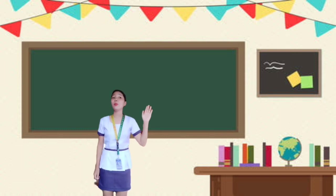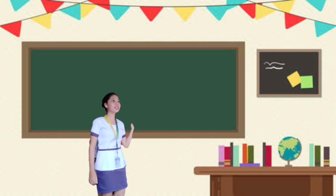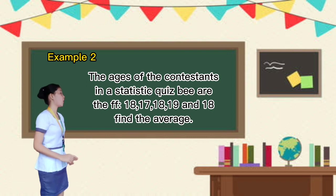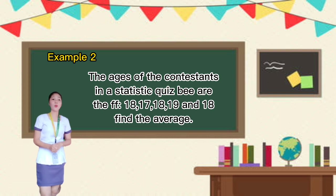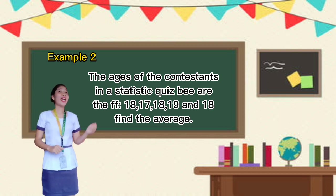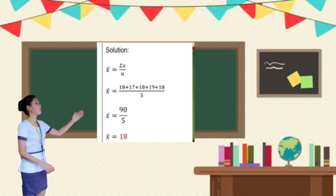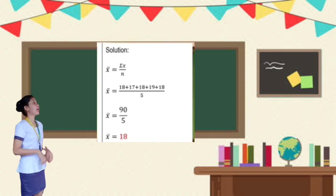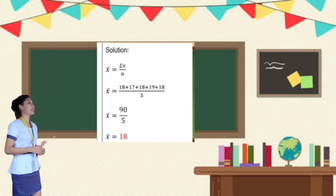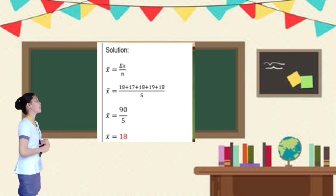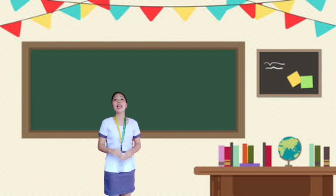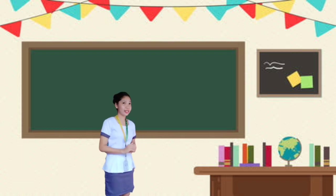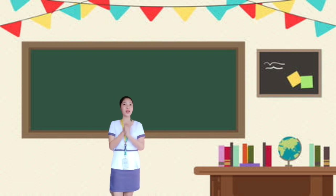Let's have another example. Who wants to volunteer? Isa, come to the board. The ages of the contestants of a statistics quiz bee are: 18, 17, 18, 19, and 18. Find their average. Using x̄ = Σx / n, we have 18 + 17 + 18 + 19 + 18 = 90, divided by 5, which equals 18. Let's give 3 claps for Isa. Do you have any questions, class?